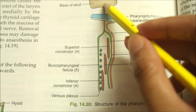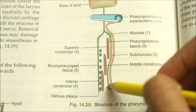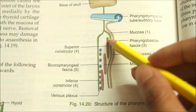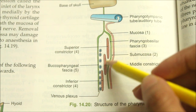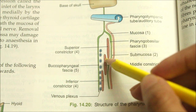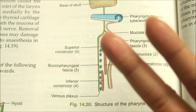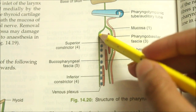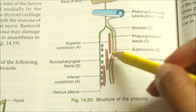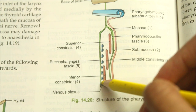Superiorly the pharyngobasilar fascia is attached to the basiocciput, the petrotemporal bone and the auditory tube; inferiorly it is deep to the muscles. The fourth layer is the muscular coat, consisting of an outer circular layer made up of 3 constrictors — the superior, middle and inferior constrictor — and an inner longitudinal layer made up of the stylopharyngeus, salpingopharyngeus and palatopharyngeus muscles. Finally, the fifth layer is the buccopharyngeal fascia, which covers the outer surface of the constrictors and extends forward across the pterygomandibular raphe to cover the buccinator muscle.